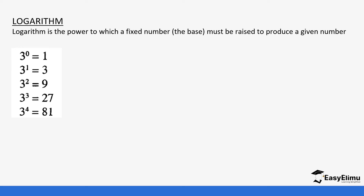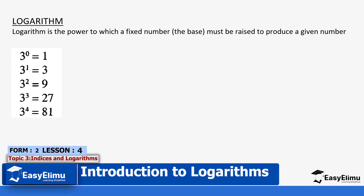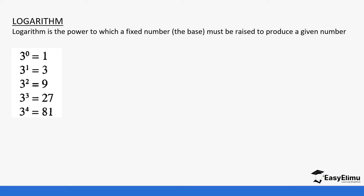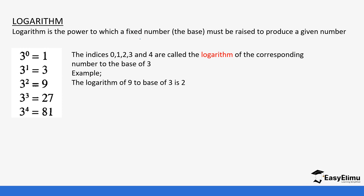Initially when we were talking about indices, we looked at some of the rules of indices. For example, three raised to zero gives you one; three raised to one gives you three; three raised to two means three times three, giving you nine; three raised to three gives you 27 because it is three times three times three; and three raised to four gives you 81. The indices — that is zero, one, two, three, four — are called the logarithm of the corresponding number.